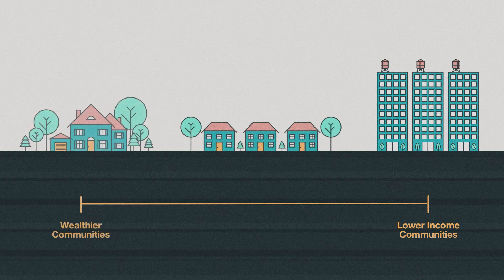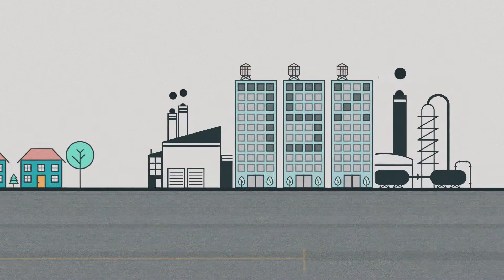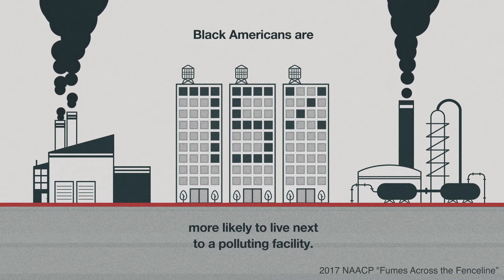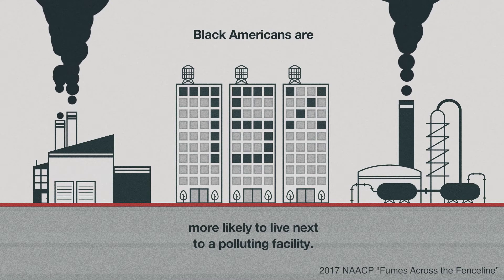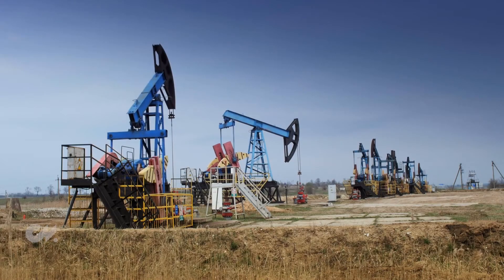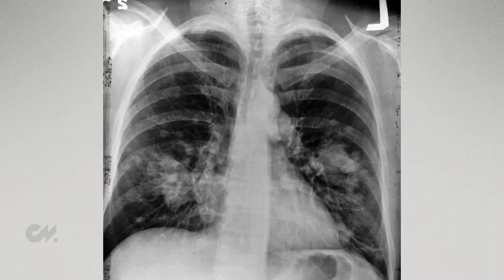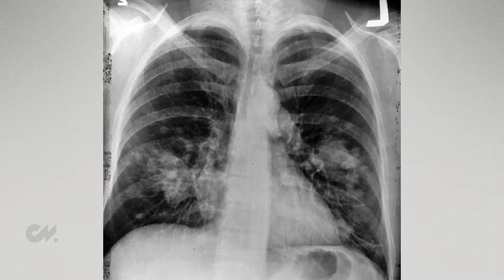It is also critical to address the fact that the impacts of climate change on human health are not equally borne by all. In the United States, low-income communities of color bear this burden much more heavily than wealthier white communities. Black Americans, for example, are 75% more likely than whites to live next to a polluting facility due to discriminatory practices like redlining. Though these practices are no longer legal, there remains a clear pattern of placing polluting facilities like oil and gas refineries next to communities of low socioeconomic standing. As a result, these communities face increased risk of respiratory diseases and cancer.